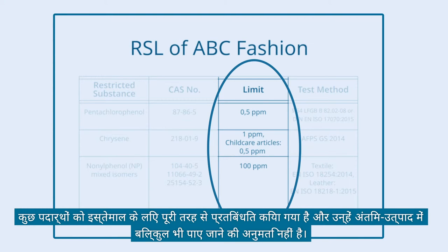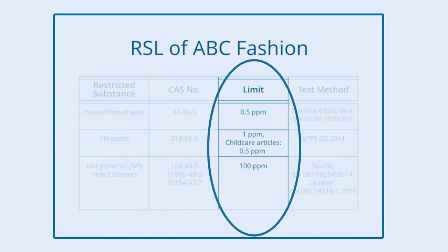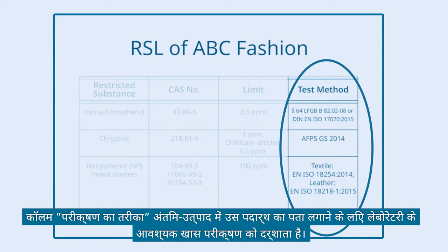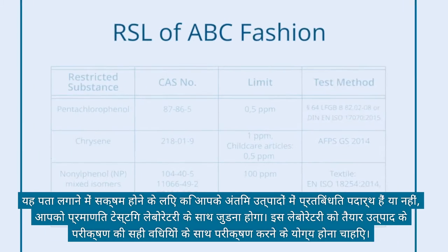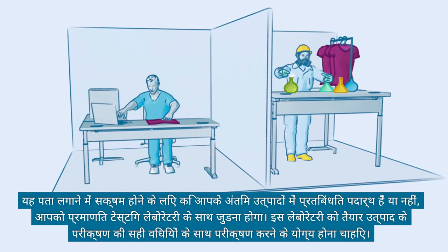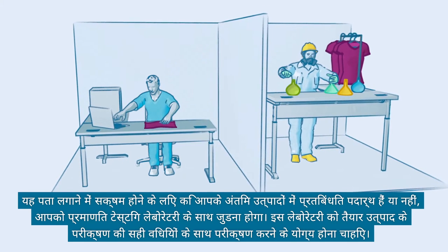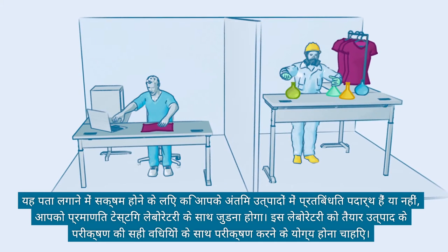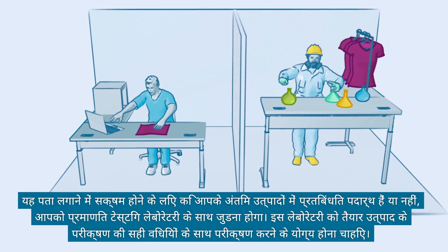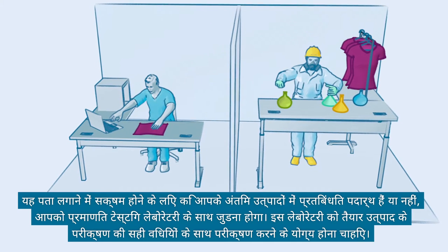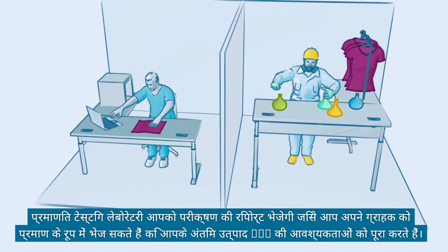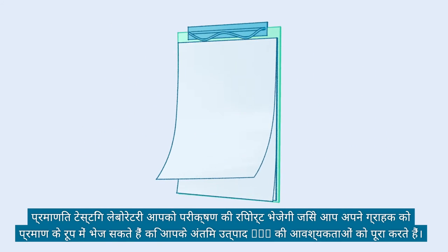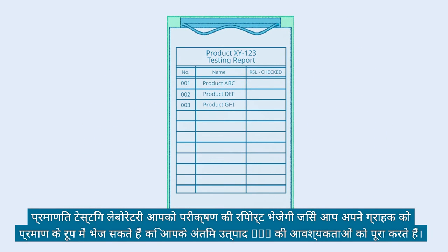The Limit column shows the maximum allowable and detectable amount of a substance in the finished product. Some substances are completely banned and are not allowed to be found in the end product at all. The Test Method column indicates the specific laboratory test required for detecting that substance in the end product. To detect whether restricted substances are present in final products, you will need to collaborate with a certified testing laboratory qualified to test the finished product with the correct test methods. The certified testing laboratory will send you a test report, which you can forward to your customer as proof.